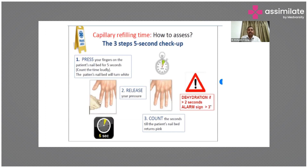The other surrogate is capillary refill time. How do we assess it? It's a three-step, five-second check. You press your finger on the patient's nail bed for five seconds, counting loudly. At the end of five seconds, the nail bed will turn white. You then release the pressure and count the seconds until the nail bed returns to pink.